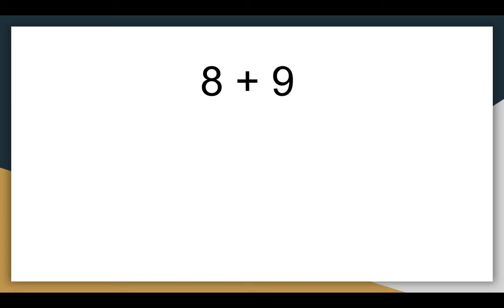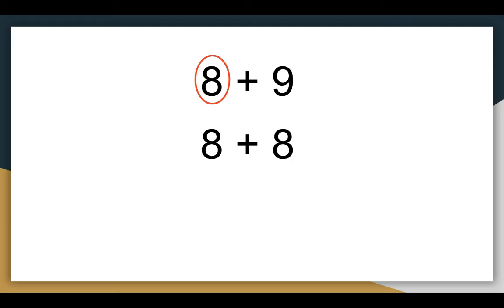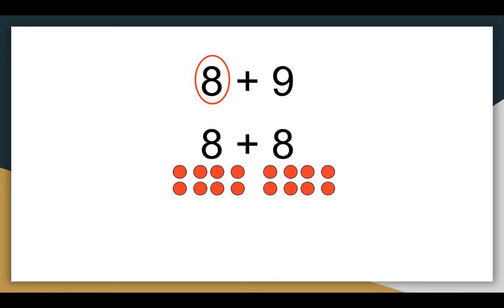Let's take a look at another example together: eight plus nine. Think about which number you would make the doubles fact from. Eight is the smaller number, so I'm going to make my doubles fact from eight. Write down what doubles fact you would use to help you with eight plus nine. The doubles fact you could use would be eight plus eight. If I know eight plus eight, then I can figure out eight plus nine. Eight plus eight is 16, and eight plus nine is only one more than eight plus eight, so I add one more to get 17.